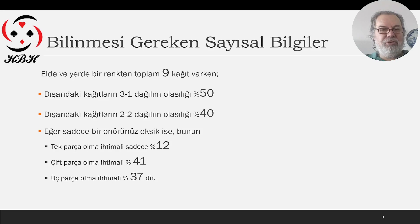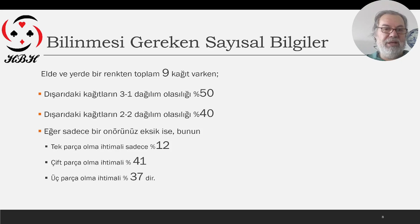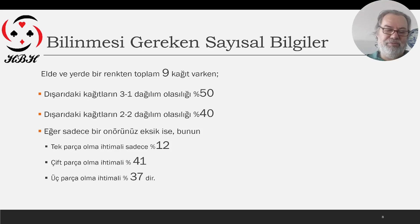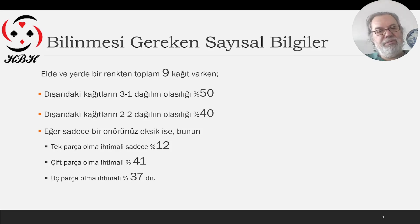Bizdeki kağıt sayısı arttı, dokuza geldi, dışarıda sadece dört kart var. Üç-bir olasılık yüzde elli, iki-iki olasılık — bunu unutmayalım — daha az, yüzde kırk. Tek onörü eksikse yüzde on iki; onörü tek parça bulma ihtimali dört kağıtta yüzde on iki, çift parça kırk bir, üç parça olma ihtimali yüzde otuz yedi.